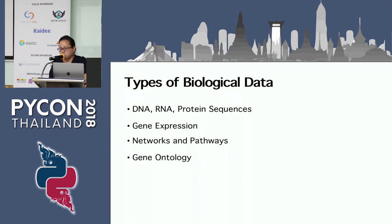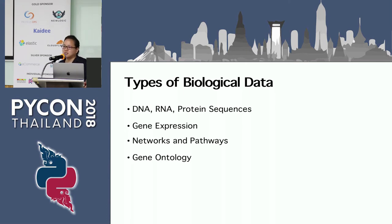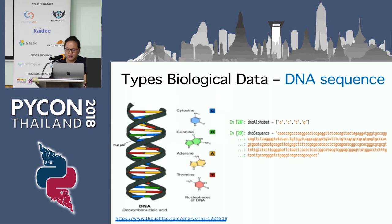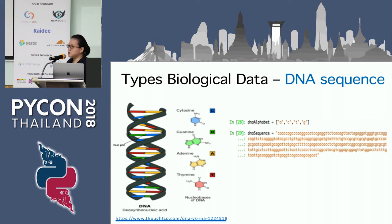The key types of biological data we need to work with consist of: DNA and protein sequences, gene expression data, network and pathway data, and gene ontology. Starting with DNA — in biological form it is a double helix structure, but in computers we represent DNA with four characters: A, C, T, and G. Usually we need to work with DNA sequences — for example, comparing DNA sequences between different organisms.